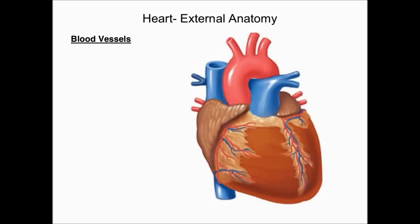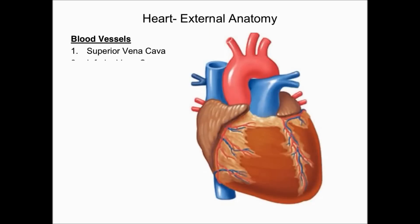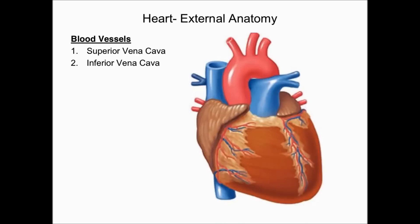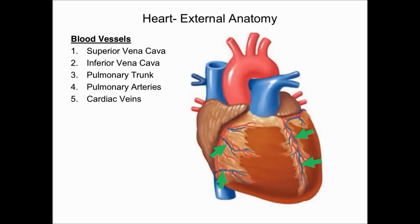Next, we look at the blood vessels that enter and exit the heart. The superior vena cava drains oxygen-poor blood from the upper body and transports it to the right atrium. The inferior vena cava drains oxygen-poor blood from the lower body and transports it to the right atrium. The pulmonary trunk transports oxygen-poor blood from the right ventricle to the lungs via the pulmonary arteries. The cardiac veins transport oxygen-poor blood from the myocardium back to the right atrium.